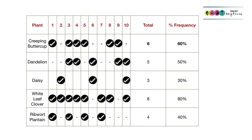Here is an example of a table you could produce when determining the frequency of a named species — for example, creeping buttercup. You can see that on the 1st, 3rd, 4th, 5th, 8th and 9th throw of the quadrat, creeping buttercup was present. That's 6 out of 10, giving a 60% frequency.